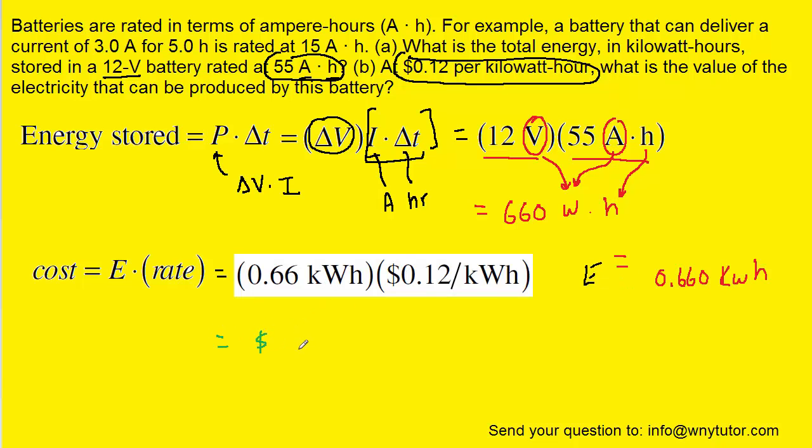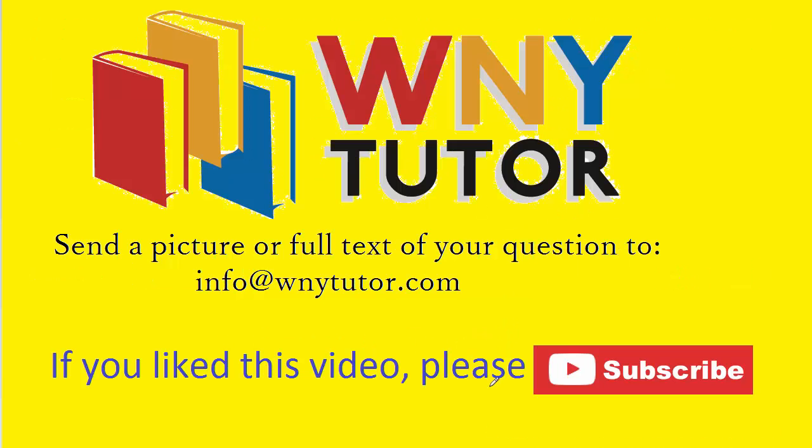And when we multiply those two quantities out, we get approximately 0.079 dollars. Or if we want to express that as cents, we just have to move that decimal over two places to the right. So we get 7.9 cents, which would be the correct answer to part B.